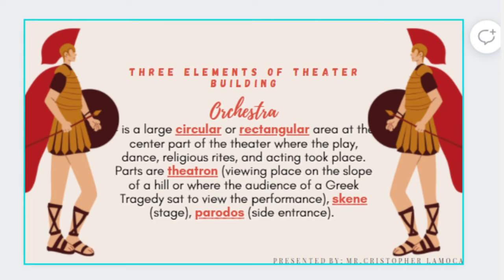The orchestra is the first of the three elements of the theater building. It is a large circular or rectangular area at the center part of the theater — as seen in the Epidaurus image — where plays, dancing, religious rites, and acting took place. The theatron is the viewing place on the slope of a hill where the audience of a Greek tragedy sat to watch the performance. There is also the skene (stage) and the paradox (side entrance).